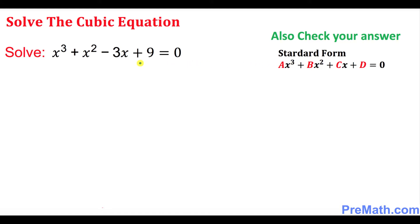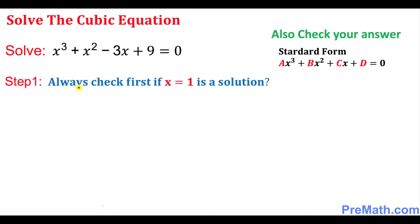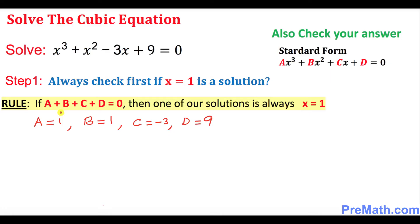The next step is to find the solution. We must try x = 1 and x = -1 as two of our solutions because they are easy to find. We're going to check if x = 1 is a solution. The rule says that if you add the coefficients a, b, c, and d and they equal 0, then one solution is x = 1.